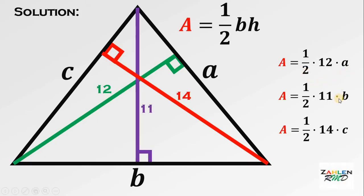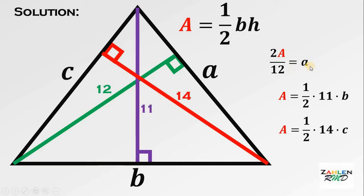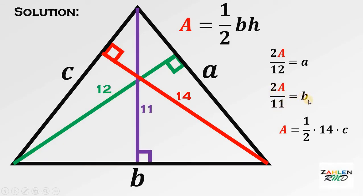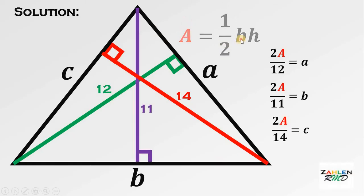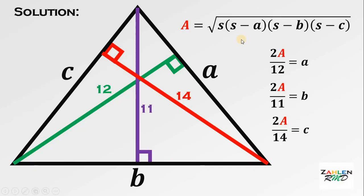Next, we solve for the values of sides A, B, and C in terms of the area. From the first equation, A equals 2 times the area over 12. From the second equation, B equals 2 times the area divided by 11. From the third equation, C equals 2 times the area divided by 14. Now, we also use Heron's formula to find the area: the square root of S times (S minus A) times (S minus B) times (S minus C), where S is the semi-perimeter — the sum of all sides divided by 2.